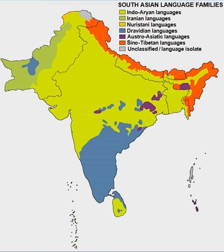Vedic Sanskrit is the language of the Vedas, a large collection of hymns, incantations, and religio-philosophical discussions which form the earliest religious texts in India and the basis for much of the Hindu religion. Modern linguists consider the metrical hymns of the Rigveda to be the earliest. The hymns preserved in the Rigveda were preserved by oral tradition alone over several centuries before the introduction of writing, the oldest among them predating the introduction of Brahmi by as much as a millennium.